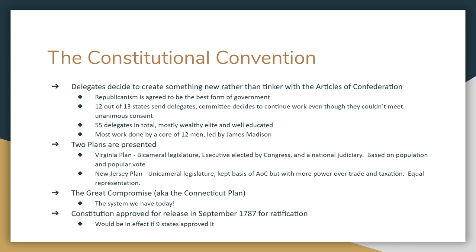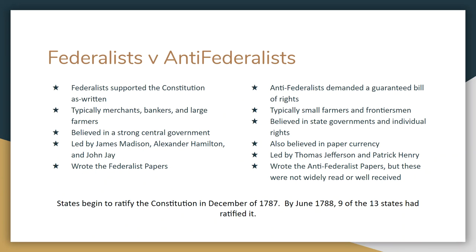Remember, only 12 of 13 states were there, so technically they couldn't do any of this. They took it one step further: the Constitutional Convention decided that if nine states agreed to the new Constitution, it would go into effect — they'd never get all 13 to agree. The fight for the Constitution broke down into two sides: Federalists and Anti-Federalists.